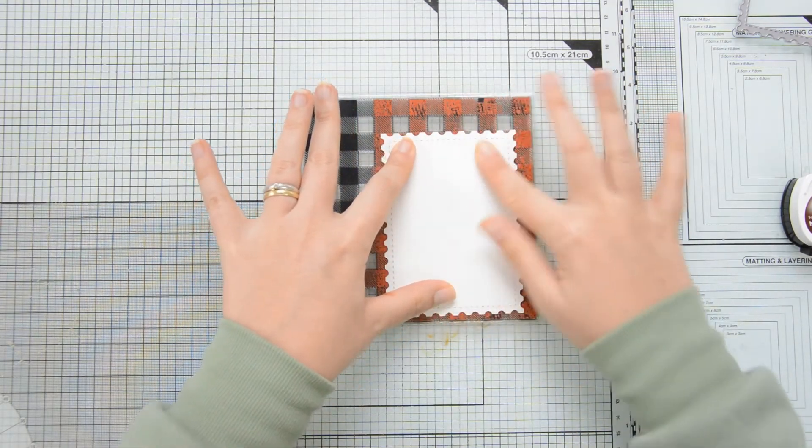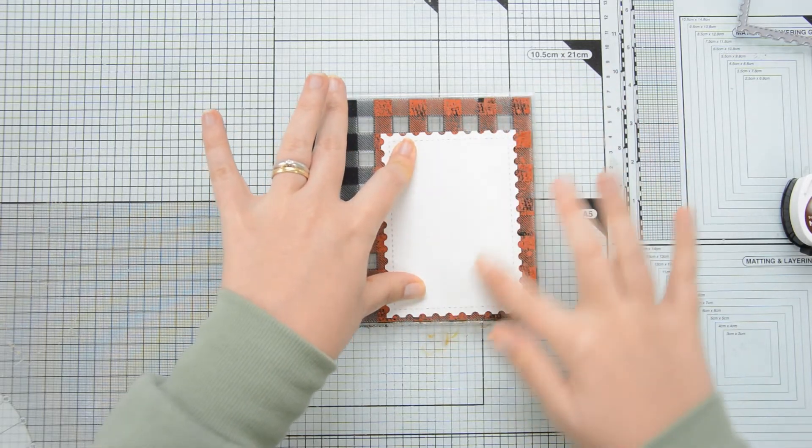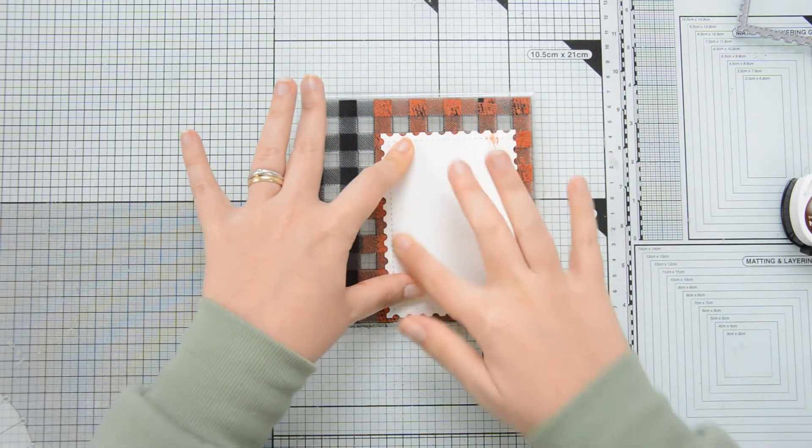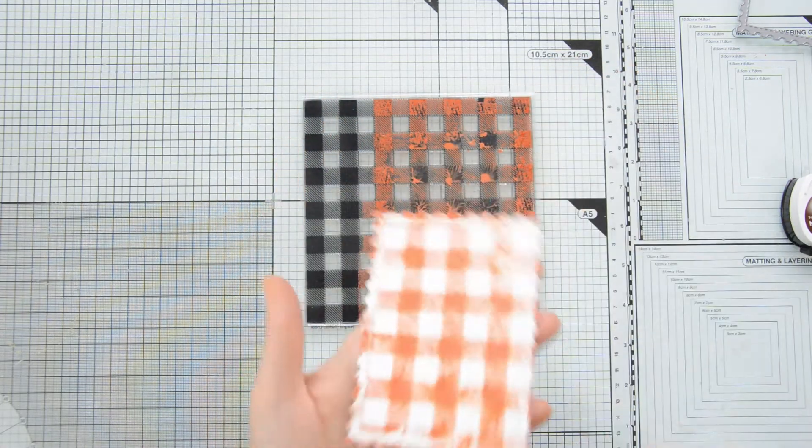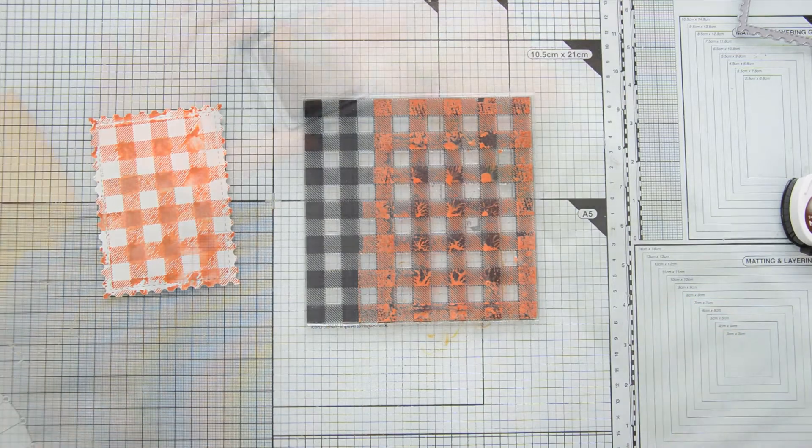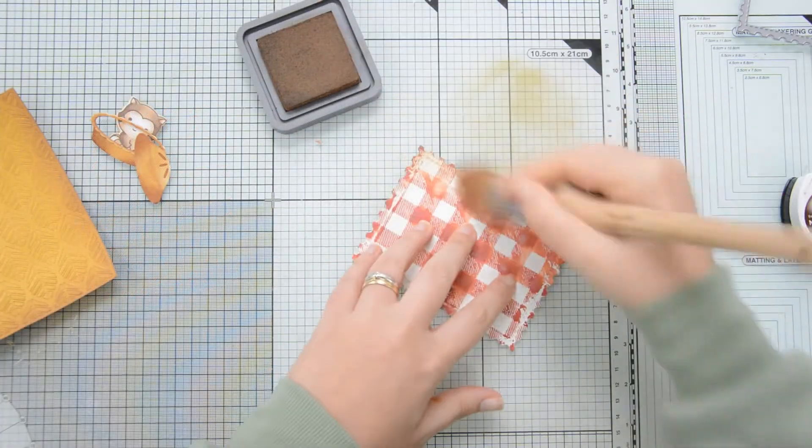I'm going now to press my panel face down onto the stamp and rub the back so that I transfer the ink and then I can carefully lift off my die cut panel and here you can see the result with this looser watercolor type look.